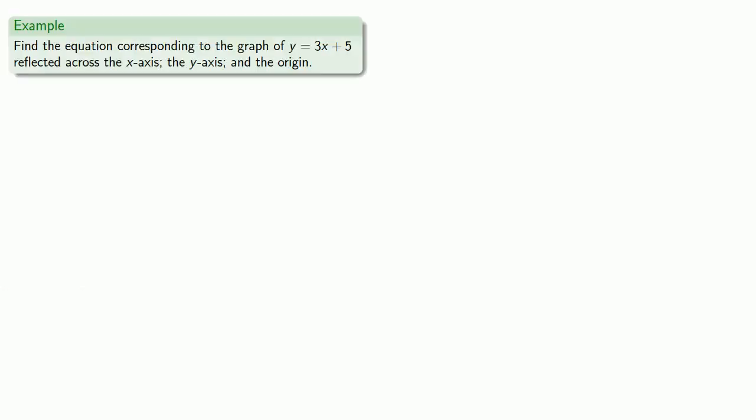So, we can find the equation corresponding to the graph of y equals 3x plus 5, reflected across the x-axis, the y-axis, and the origin. Let's suppose (x, y) is a point on the graph of y equals 3x plus 5.